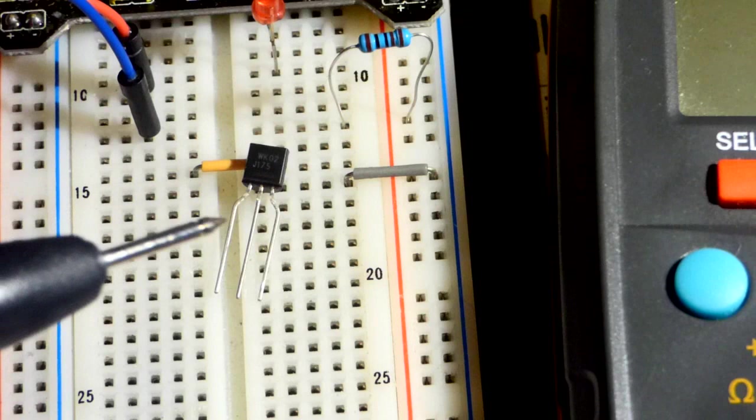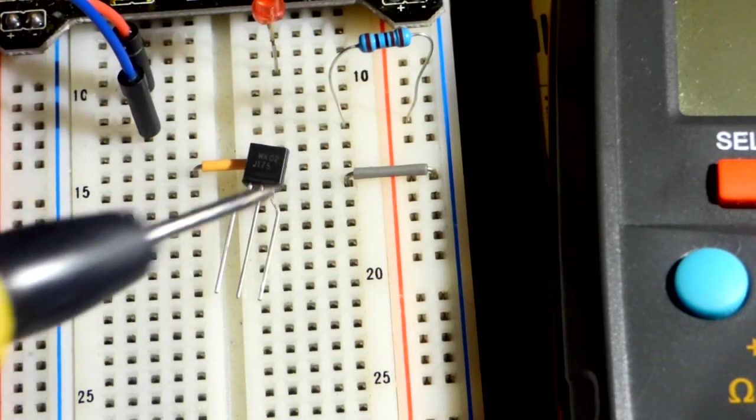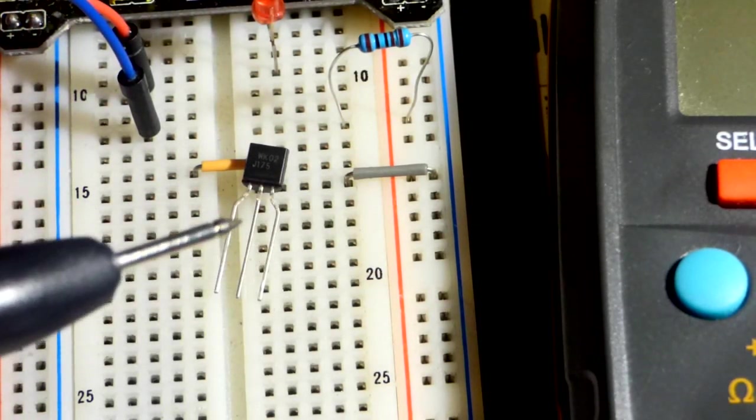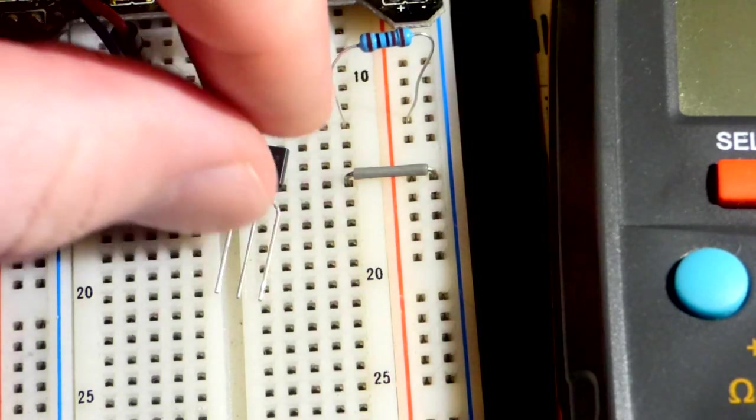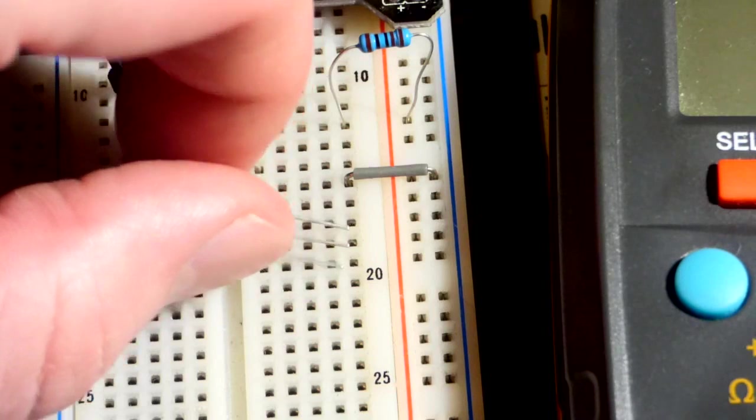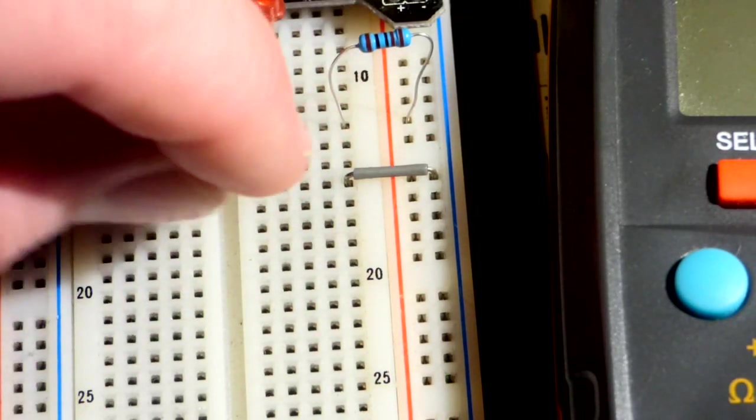The source needs to be more positive. The drain more negative. And the gate will give a signal to control how well it conducts current from source to drain.